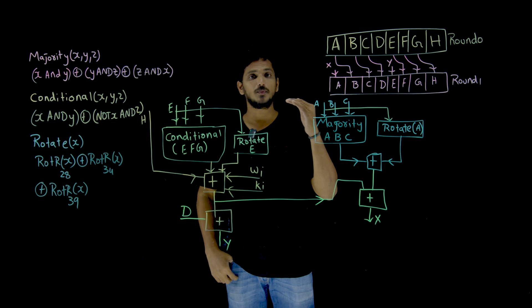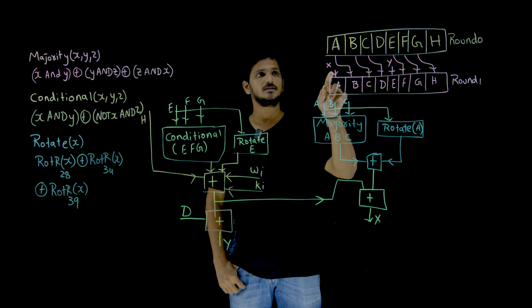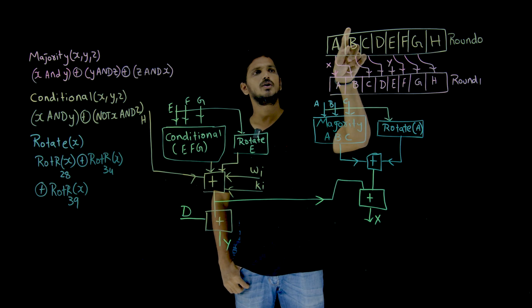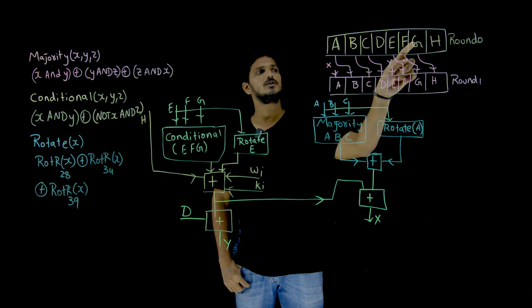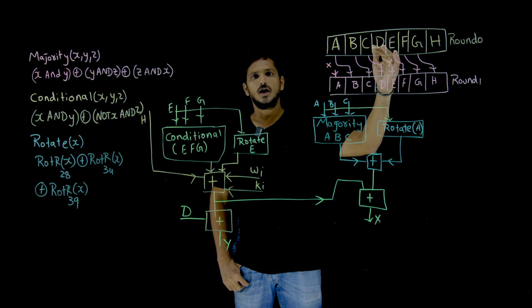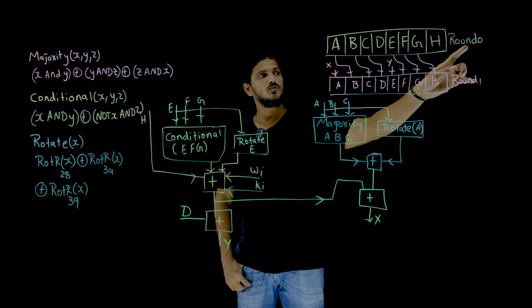Coming to today's class, we mentioned in our last class the compression function is going to take inputs A0, B0, C0, D0, E0, F0, G0 and H0 and they are sent into round 0.